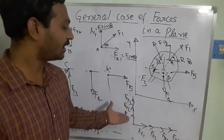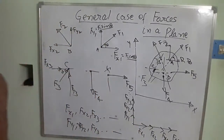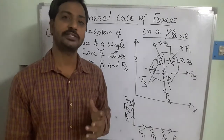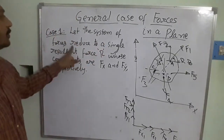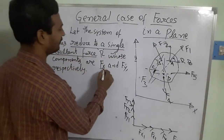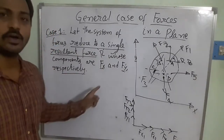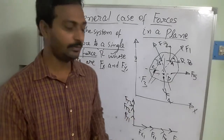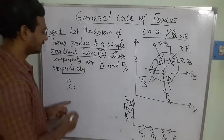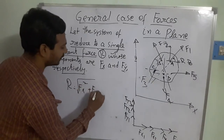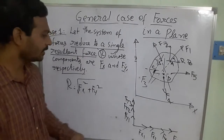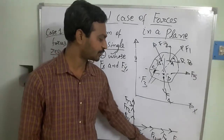To find the resultant component, we consider three cases. Case 1: the system of forces reduces to a single resultant force R whose components are Fx and Fy. This is similar to what we have seen in concurrent and parallel forces. The resultant is R = √(Fx² + Fy²). The horizontal resultant Fx is the summation of all x-direction forces, and Fy is the summation of all y-direction forces.